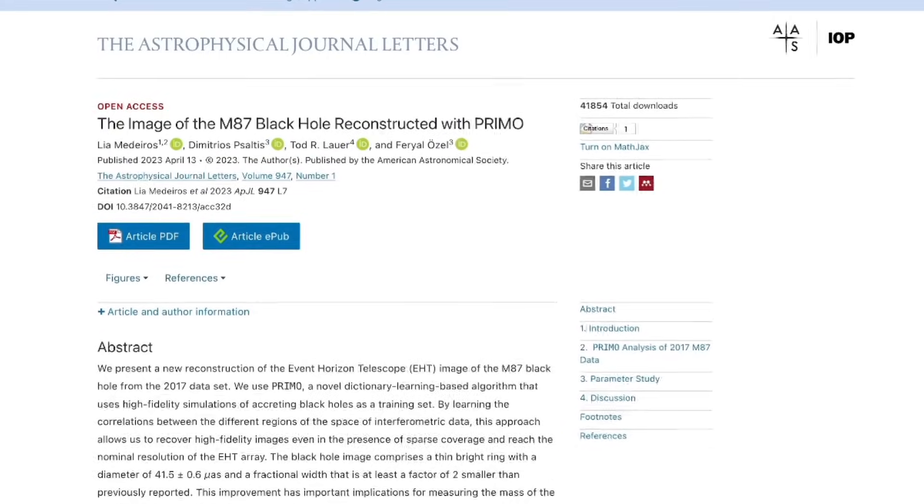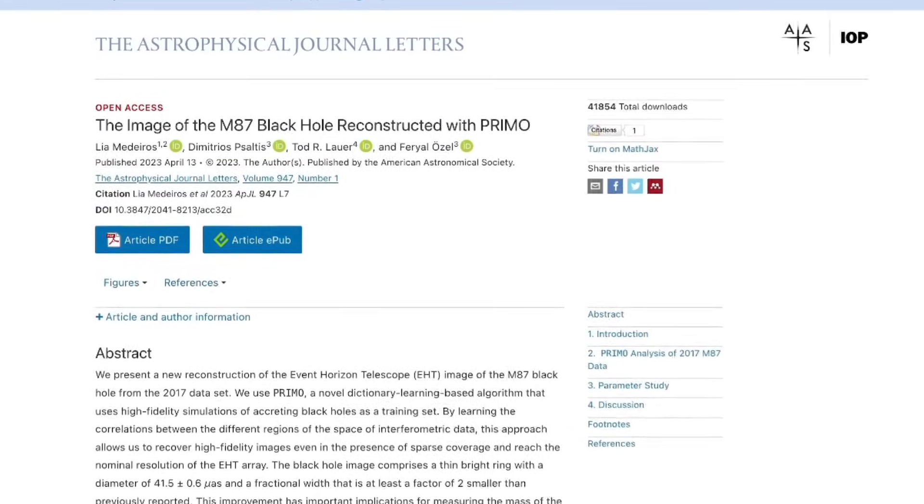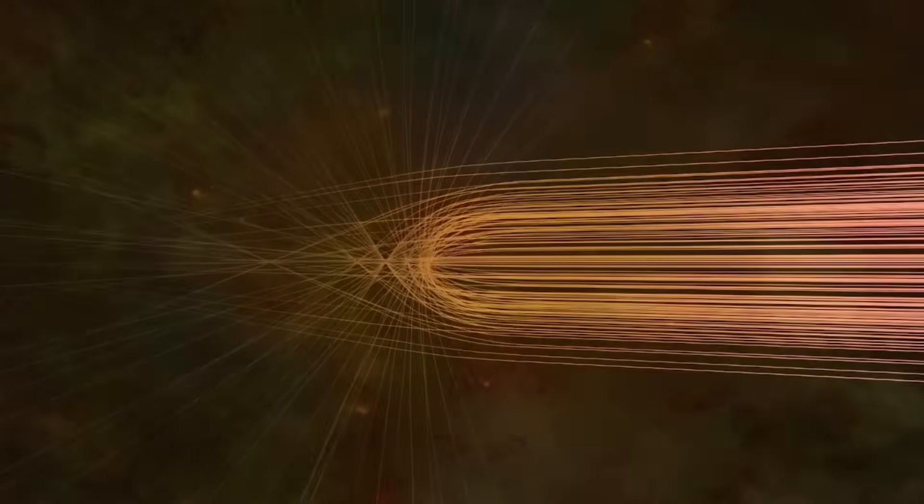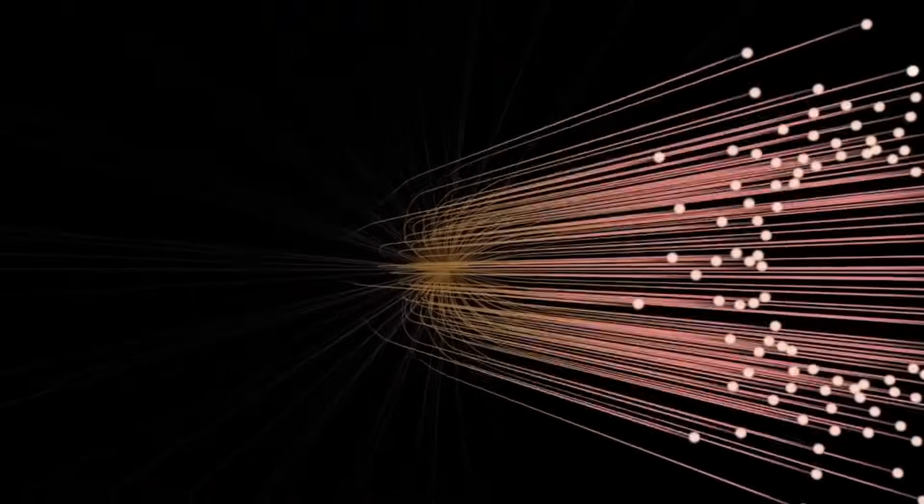This is where integrated information theory re-enters the conversation. As we explored earlier, IIT proposes that consciousness arises wherever information becomes deeply integrated. The more a system links its parts into a coherent whole, the more aware it becomes. In black holes, they're integration machines.